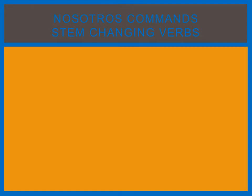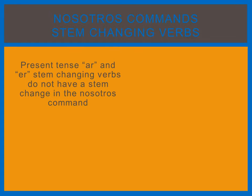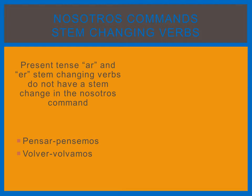The one special thing about nosotros commands that makes them more difficult than ustedes commands are the stem-changing verbs. Present tense AR and ER stem-changing verbs do not have a stem change in the nosotros command. For example, pensar, which usually has an I-E stem change — the yo form would be pienso — does not have a stem change, and it is pensemos. You still follow the steps of dropping the O and adding the opposite ending, but do not use a stem change. Volver, which is usually a U-E stem changer, is volvamos.